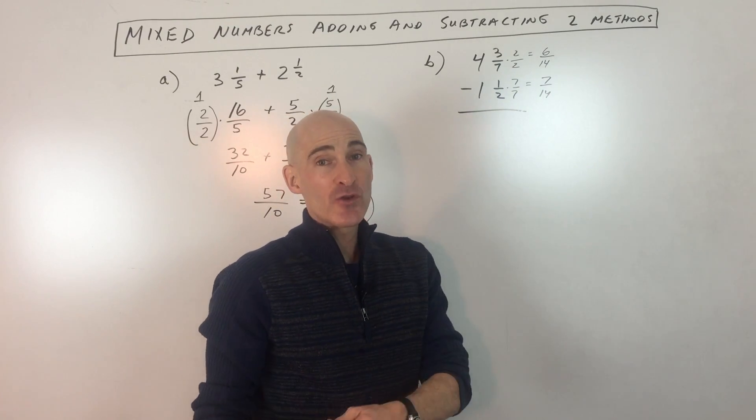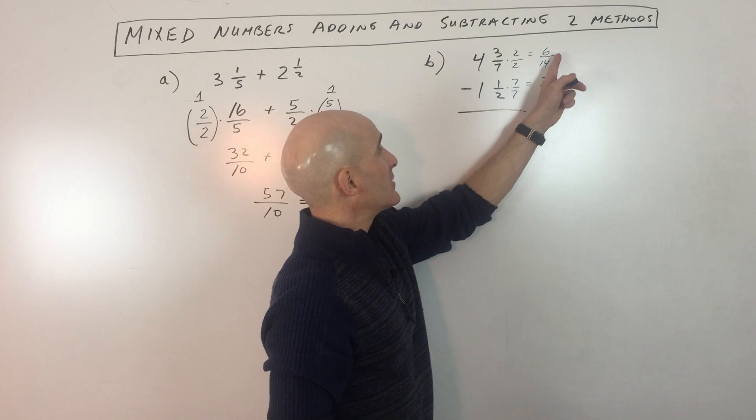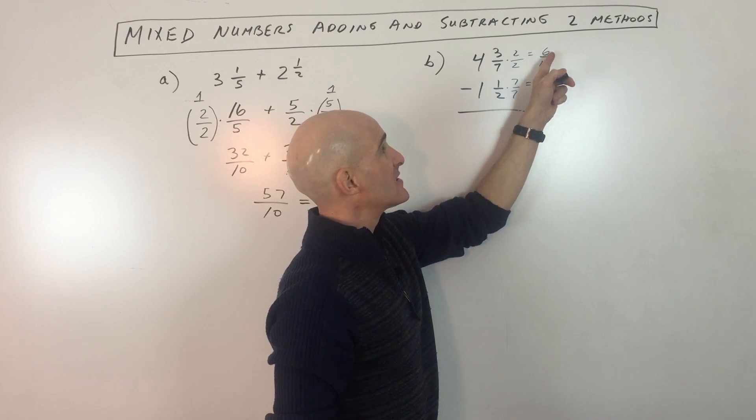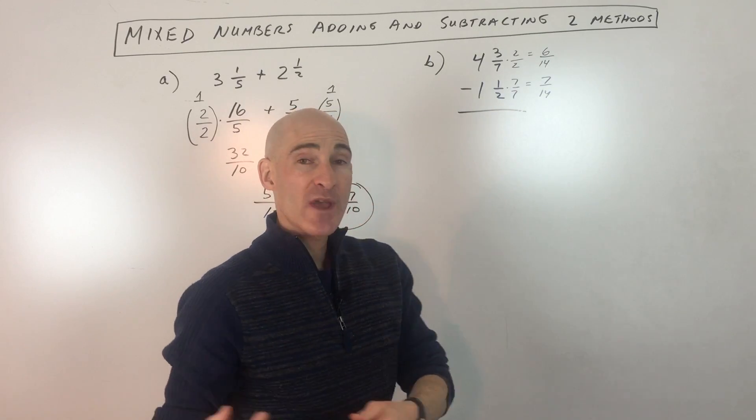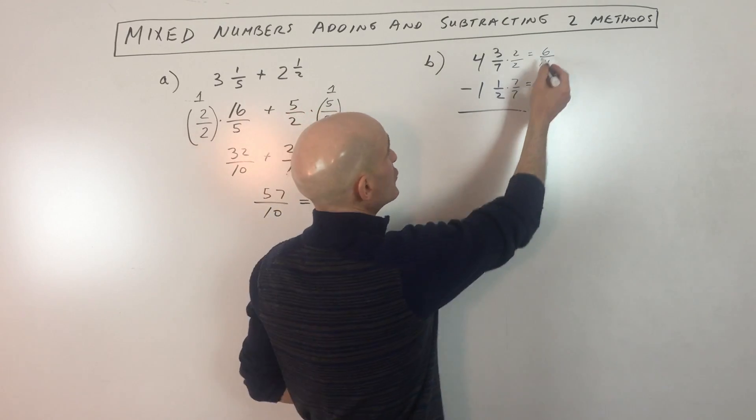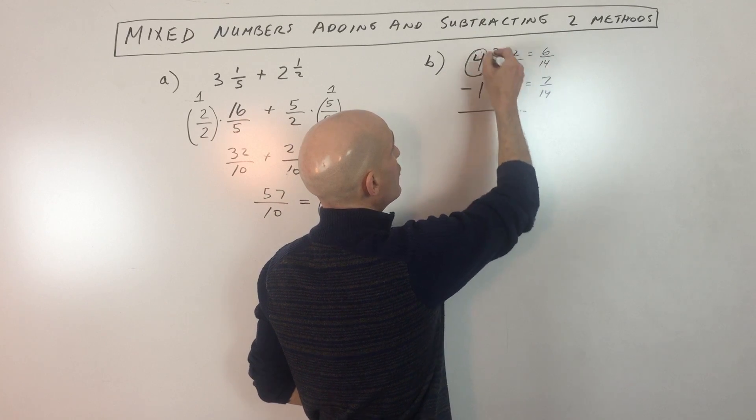Now, you might notice that we have an issue here because we're subtracting. We have six minus seven. How can you take away seven from six? Seven is larger than six, right? So what we have to do is we have to borrow. And so what we're going to do is we're going to go over here to the whole number. We're going to say, whole number, I want to borrow one.